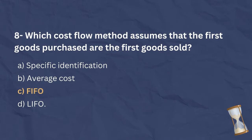The correct answer is C. FIFO assumes that the oldest goods purchased are the first goods sold. This means that the ending inventory consists of the most recent purchases, while the cost of goods sold includes the earliest purchases.